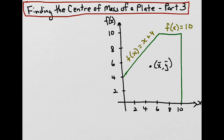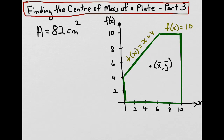In part 1, we found the equations of all the boundary lines. The line along the left side was x equals 0, on the right side was x equals 10. From the interval 6 to 10, the boundary line was f(x) equals 10, and from 0 to 6, the diagonal line was f(x) equals x plus 4. Along the bottom, our equation was y equals 0. In part 2, we calculated the area of our plate and found it was 82 centimeters squared, by taking the area of the square shape and subtracting the area of the cut-out triangular part.